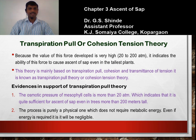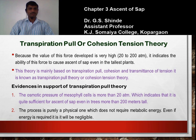This indicates the ability of this force to cause the ascent of sap even in the tallest plants like eucalyptus, which are more than 100 meters in height. This theory is mainly based on transpiration pull, cohesion, and transmittance of tension. It is known as the transpiration pull theory or cohesion-tension theory, and is also called the cohesion and adhesion theory.